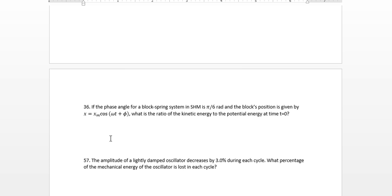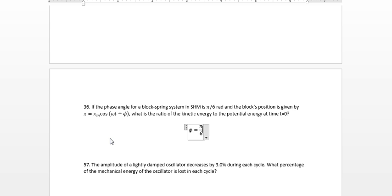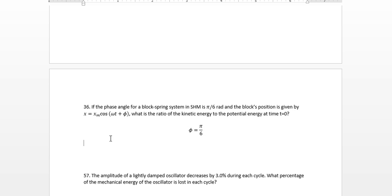We've got the position given by x equals xm cosine omega t plus phi. What is the ratio of kinetic energy to potential energy at time t equal to zero? They're telling us a phase angle phi, this phi is pi over six, and so the question is what is the ratio between kinetic and potential energy at time t equals zero?